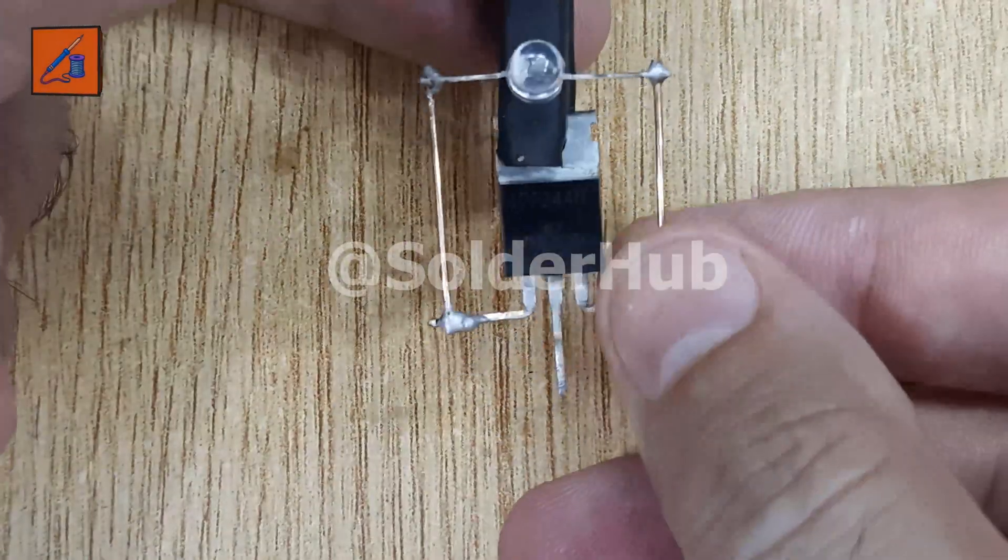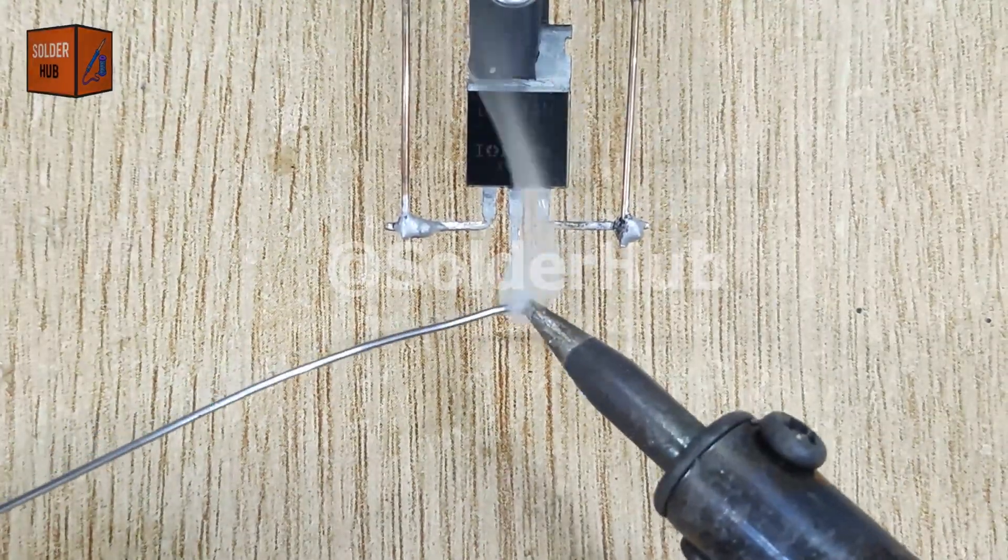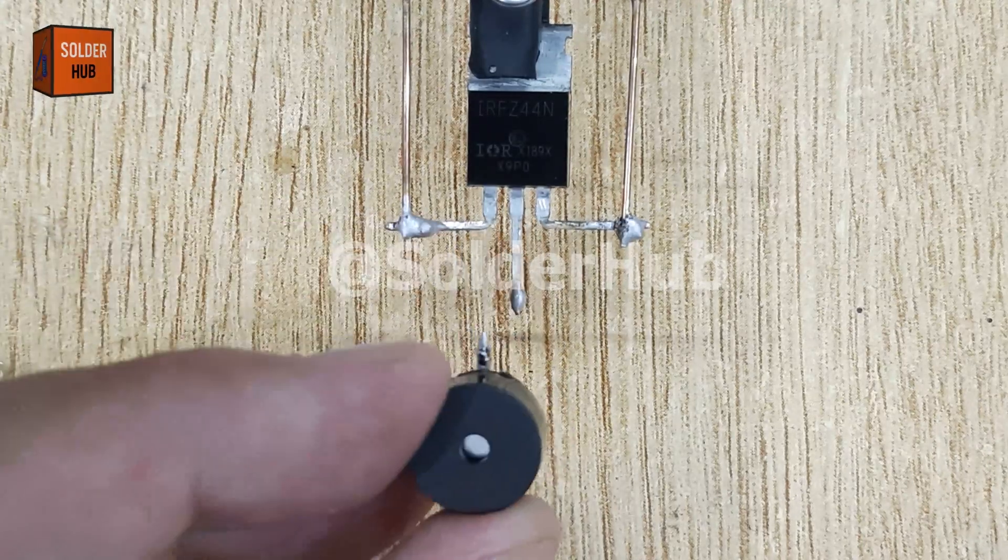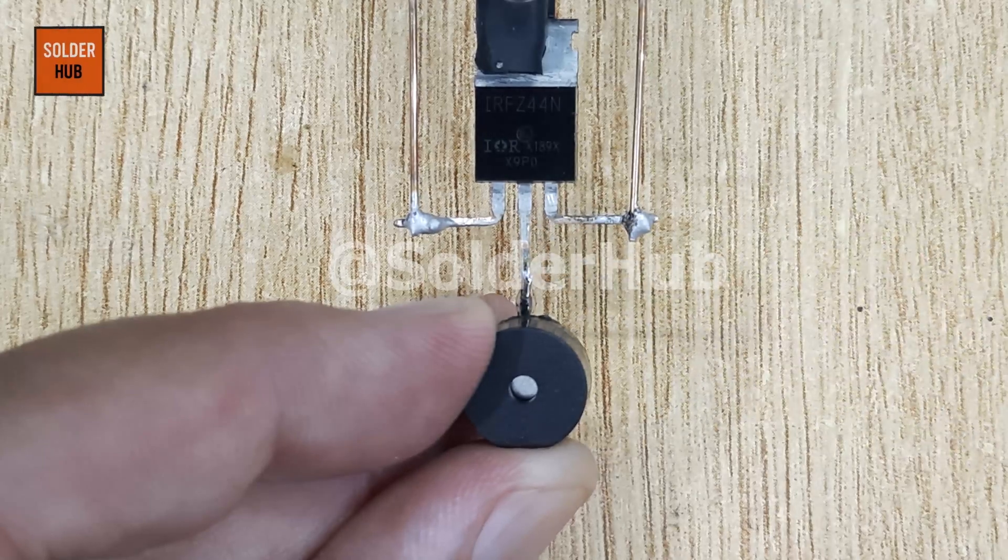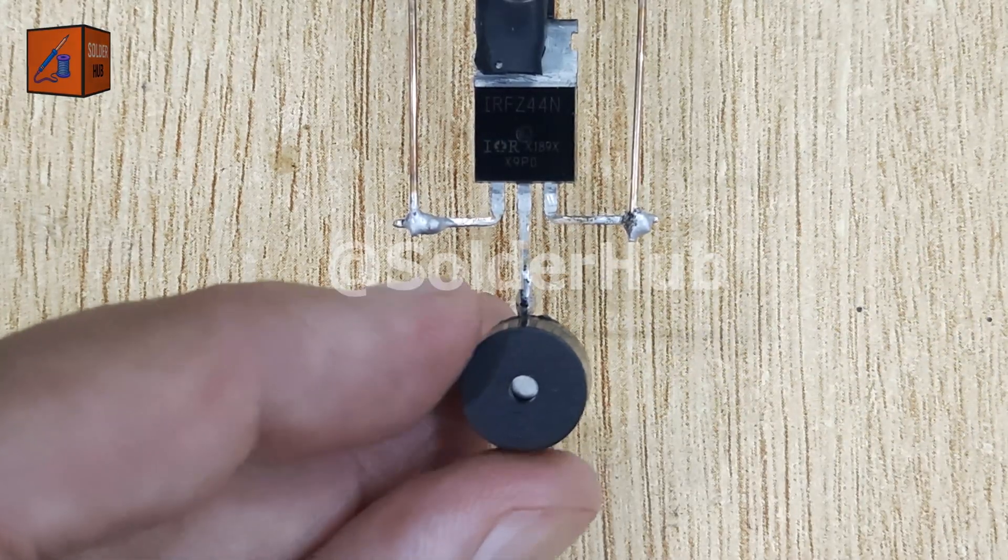Moving on, I apply solder to the drain pin of the MOSFET. This is the main output pin that controls the load. To this drain pin, I solder the negative pin of the buzzer. The buzzer will produce the siren sound when activated.